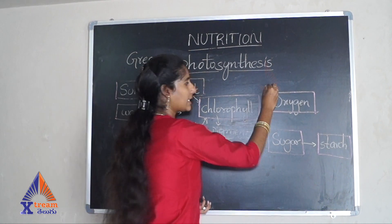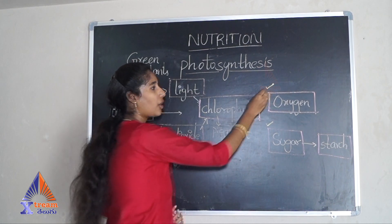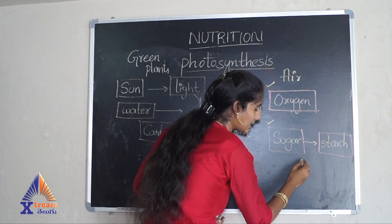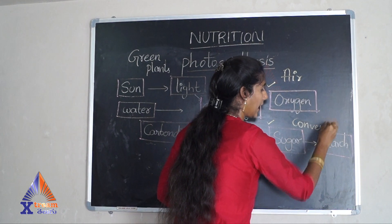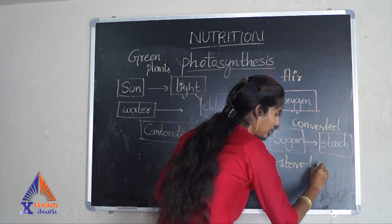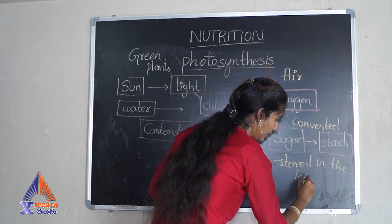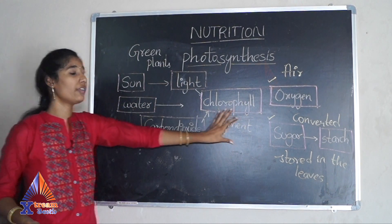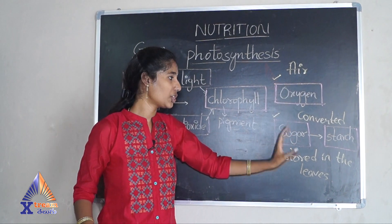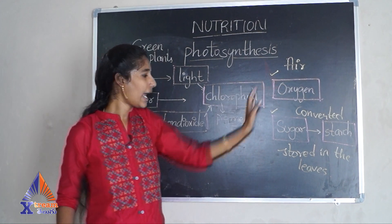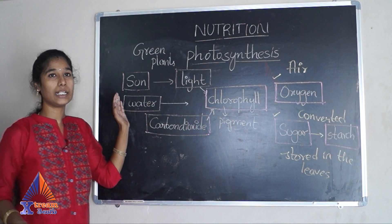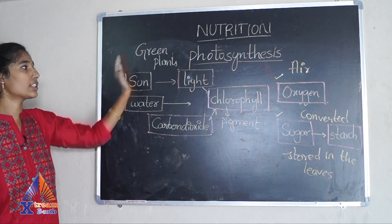Using the chlorophyll pigment, the plant converts these inputs and releases oxygen and sugar. The oxygen enters the air, and the sugar is converted into starch which is stored in the leaves. This starch is helpful as stored food for the plant. This process is called photosynthesis.